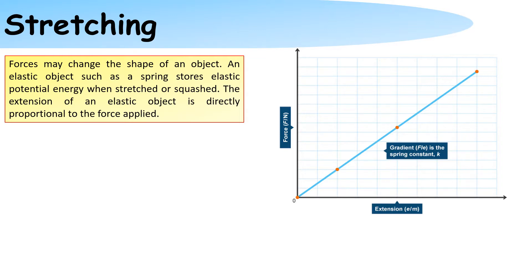This means that if, for instance, we put a force of 2 onto it, its extension would be 2 meters. If we put a force of 4 on it, then its extension would be 4.